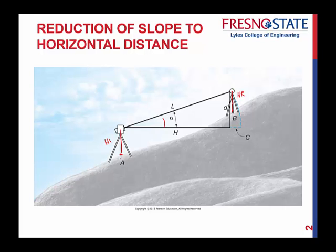And then here again, when you have a horizontal line, this angle here, alpha, that is your vertical angle. L, of course, is your slope distance, H is your horizontal distance, and D then would be your vertical distance.